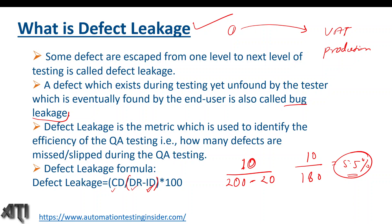So 5.5 percent of defects slipped from QA testing to the UAT level, found by the end user. Ideally, 5 to 10 percent is considered acceptable. But if it goes beyond that — like 15 or 20 percent — we need to seriously think about improving our QA testing process to minimize defect leakage.